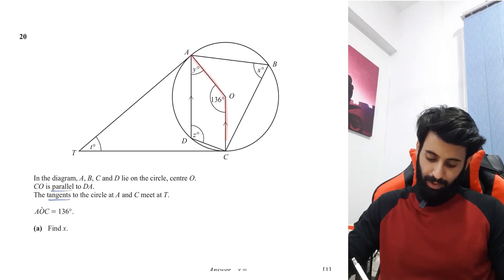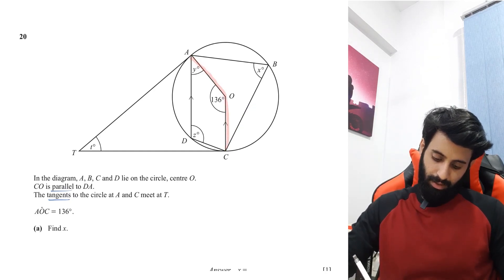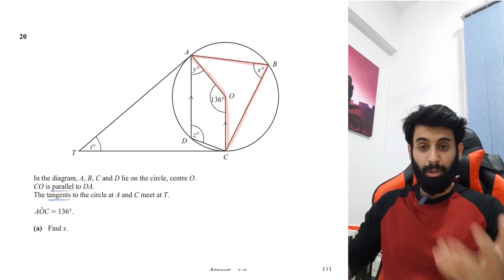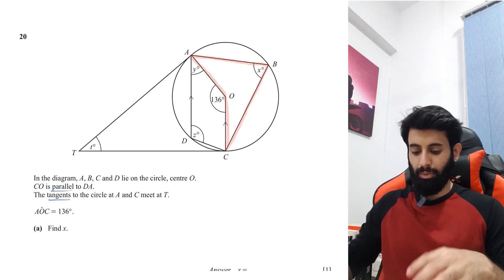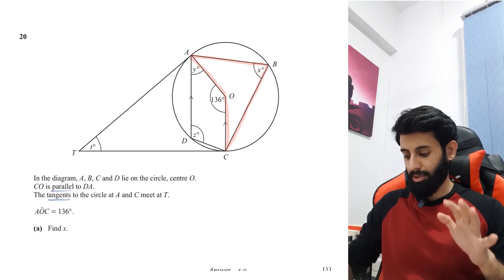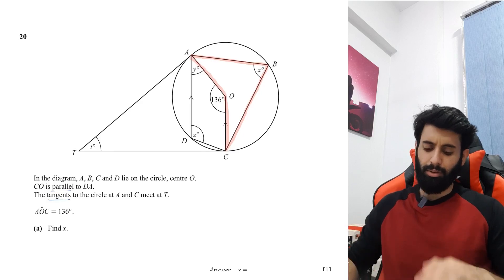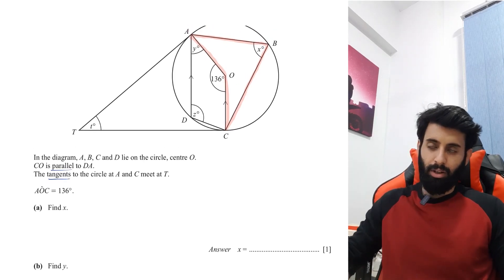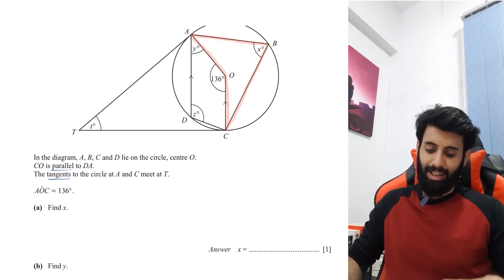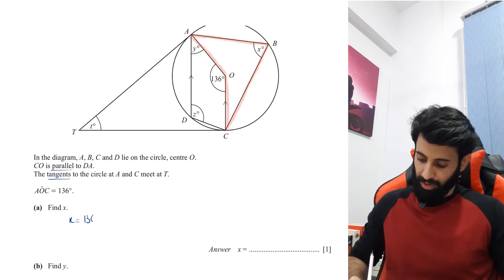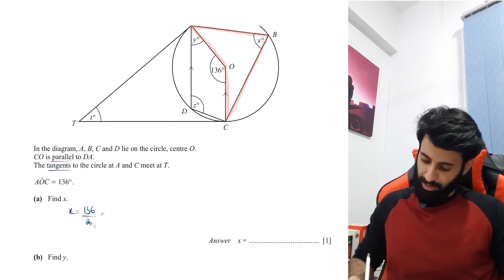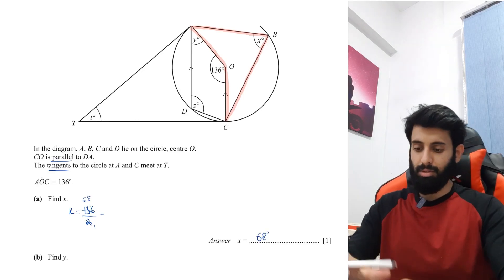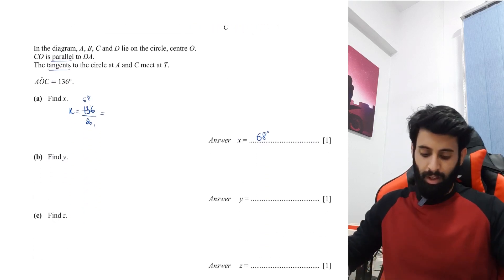Looking at this part of the diagram, one angle is at the center which is 136 degrees and the other angle is at the circumference which is X. The angle at the center is twice the angle at the circumference, so X will be half of 136 — divide by 2 — which gives 68 degrees. I'll check: 136 divided by 2 is 68 degrees.